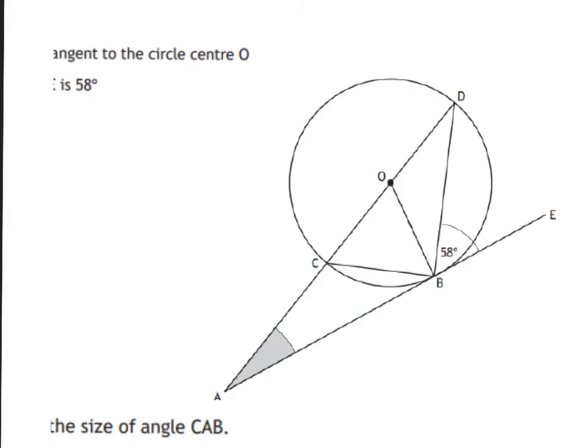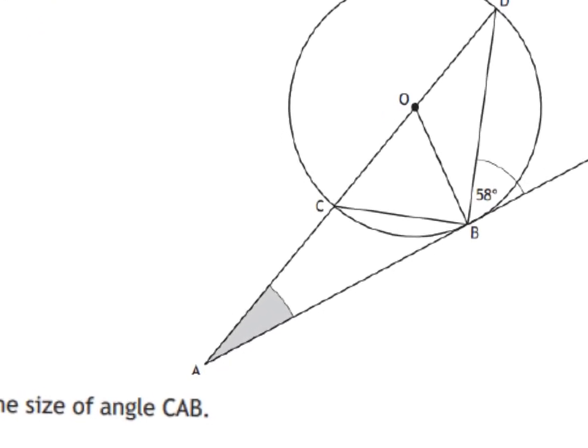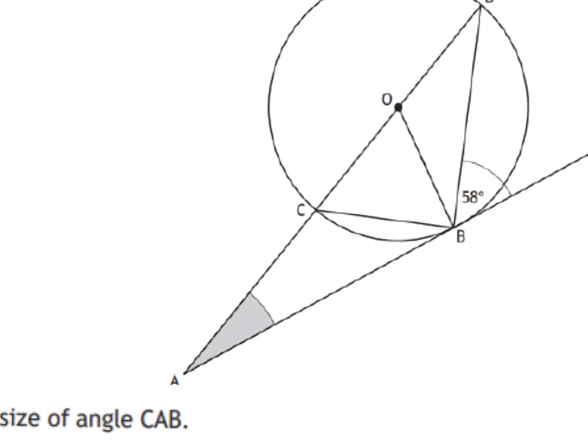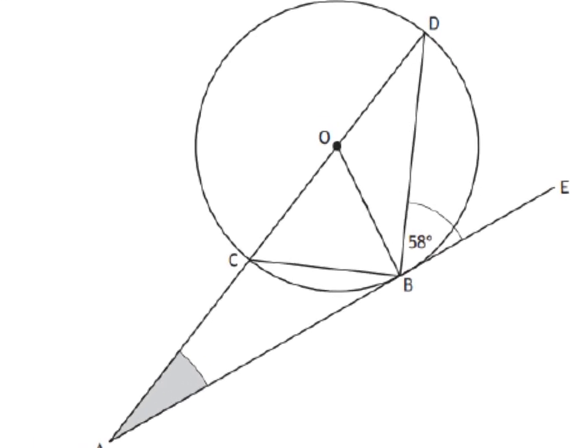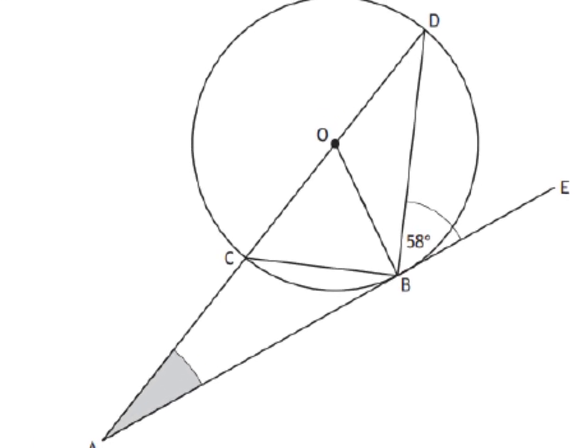Next one. I've taken out a lot of the wording just to make the diagram slightly bigger. It tells you in the question that there is a tangent, and it asks you to find the size of angle CAB, which is also shaded. Now we're on to actual exam past paper questions. You look for three things: radius and tangent making right angles, radiuses that make isosceles triangles, and a triangle within a semicircle.